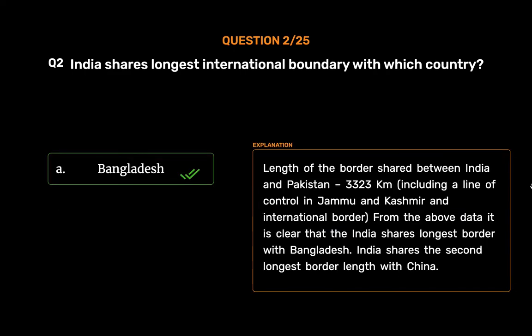The length of the border shared between India and Bangladesh is the longest. The India-Pakistan border is 3,323 km, including the Line of Control in Jammu and Kashmir. From the above data, it is clear that India shares its longest border with Bangladesh. India shares the second longest border length with China.